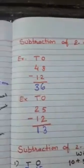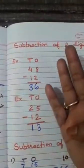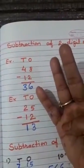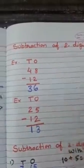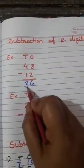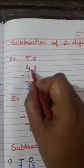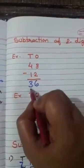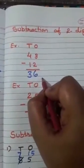Now 10s with 10s. Take out 4 fingers, minus 1. How many left? 1, 2, 3. So I write here 3. What is our answer? 48 minus 12 equal to 36.